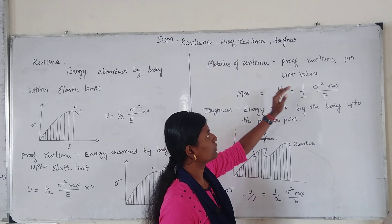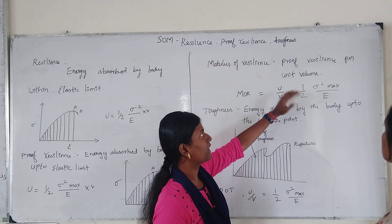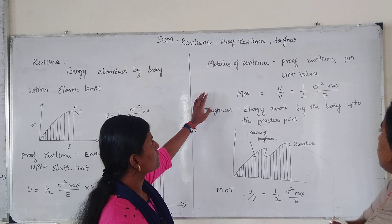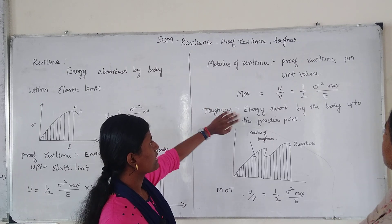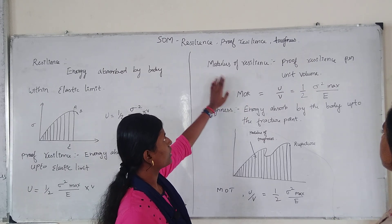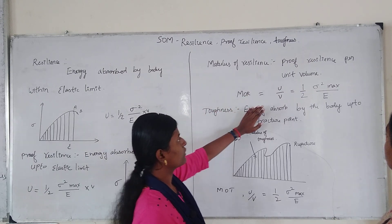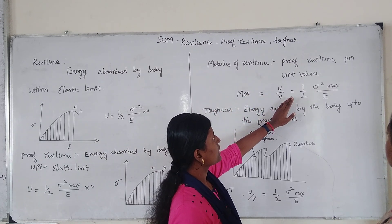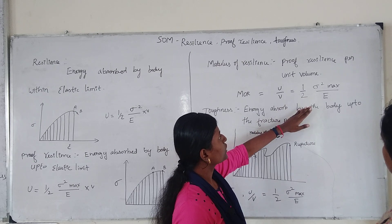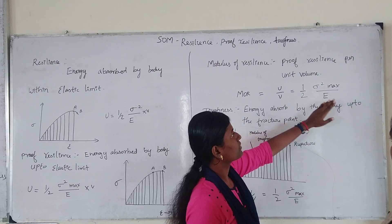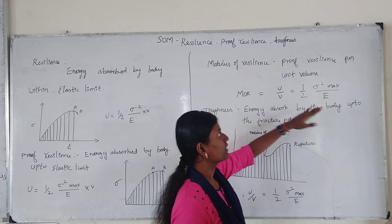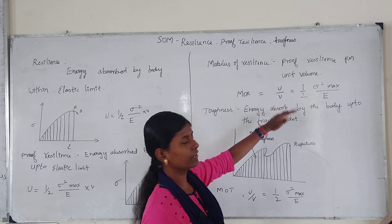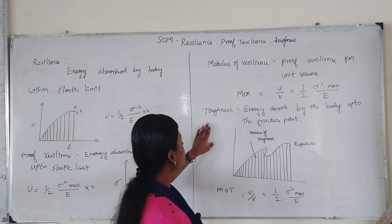Proof Resilience per unit volume is called the Modulus of Resilience. Modulus of Resilience = U / V = (1/2) × σ² / E. This is the Modulus of Resilience formula.